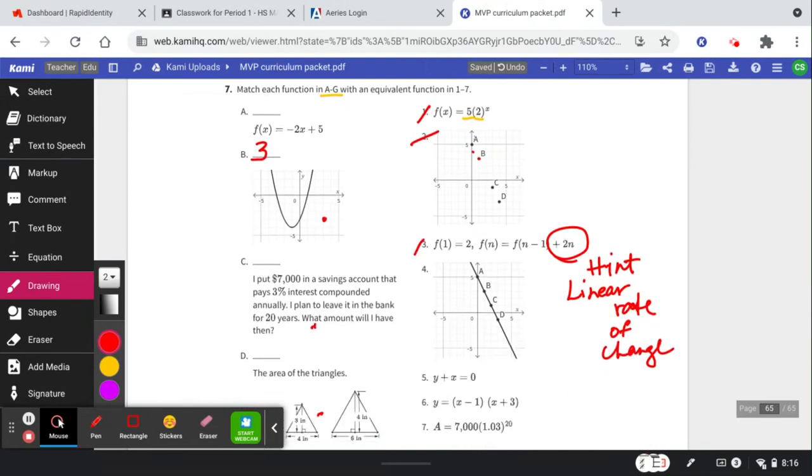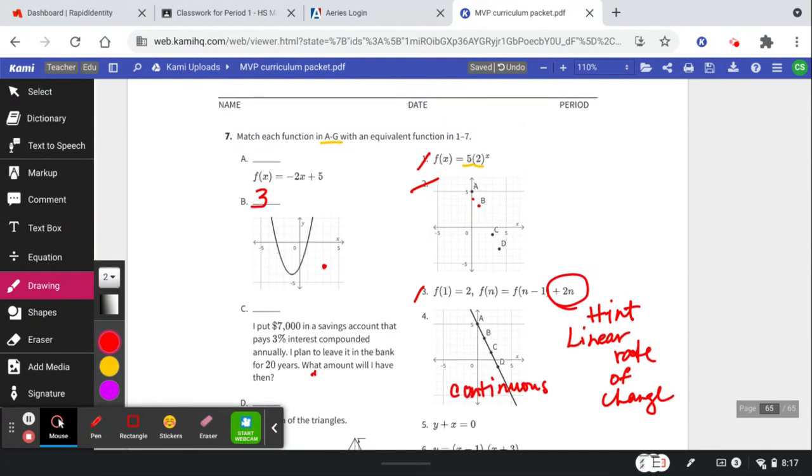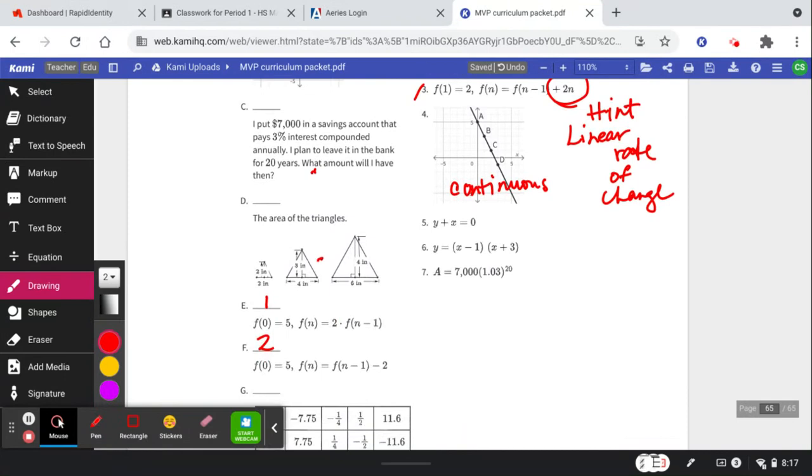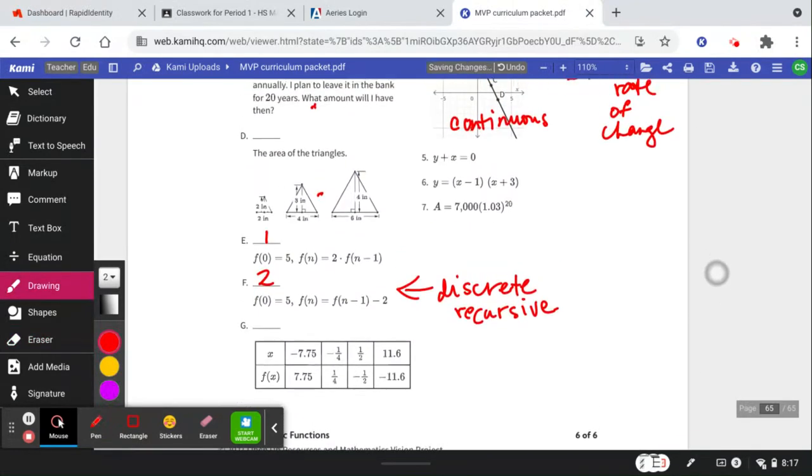Next, we've got a linear function. Look how number 4 and number 2 look so similar. What's the difference? Since this one is continuous or connected, number 4 goes with A, the continuous function. The other one went with the sequence because this one is discrete or dots. So the function is continuous, the recursive sequence is discrete. They're literally the same function, just one is dots and one is connected.